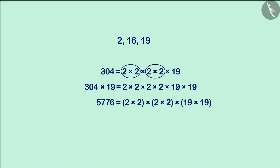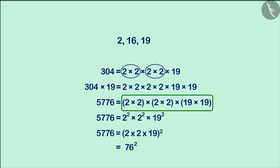We can also see its prime factors on the right-hand side where we will find all its prime factors in pairs. Therefore, the number 5776 is the smallest perfect square which is divisible by 2, 16 and 19.